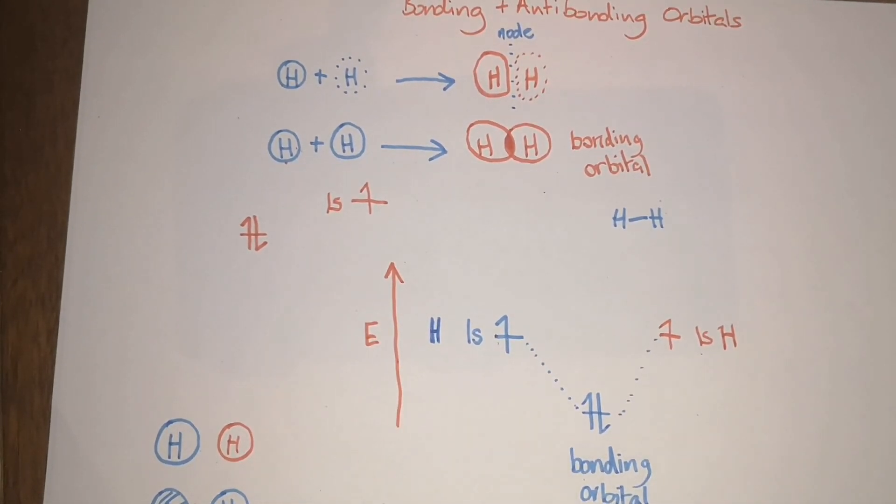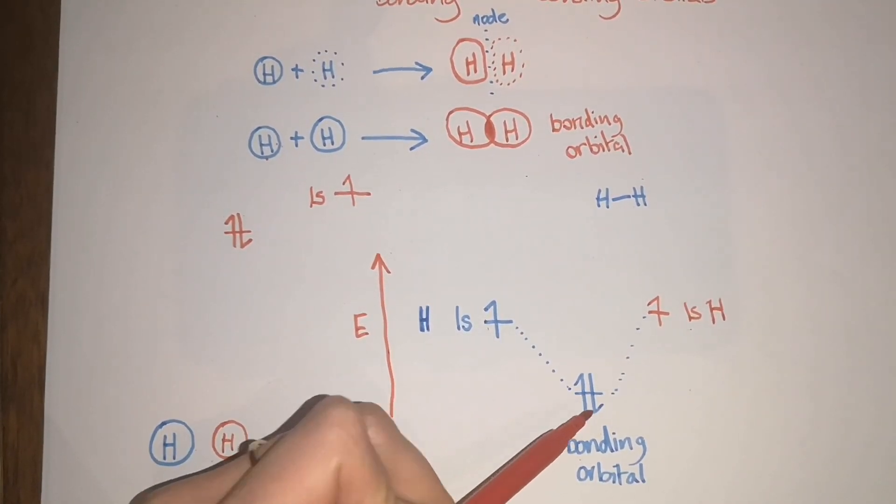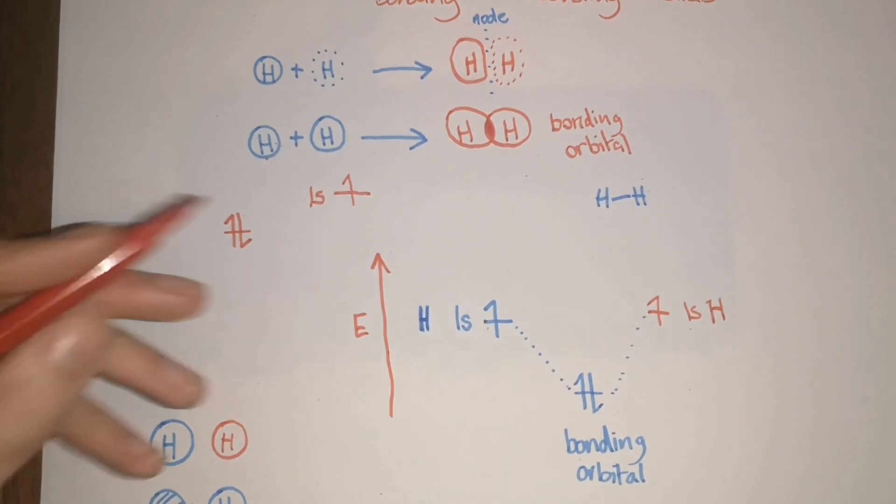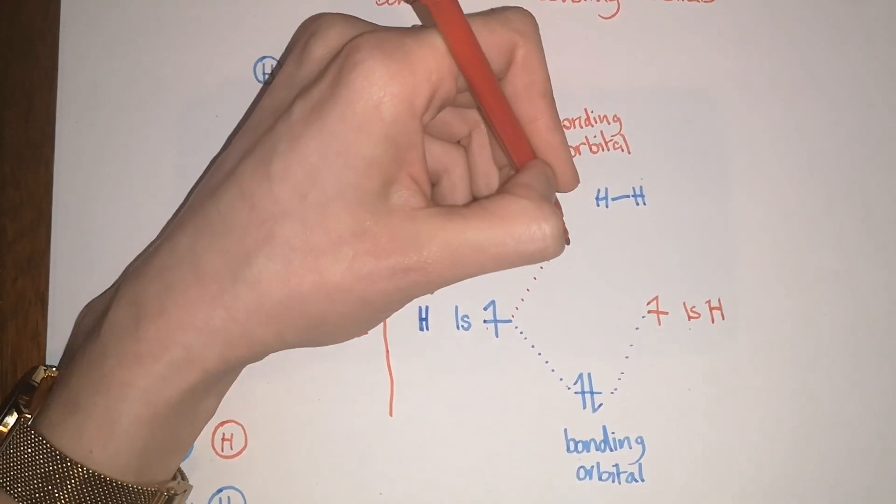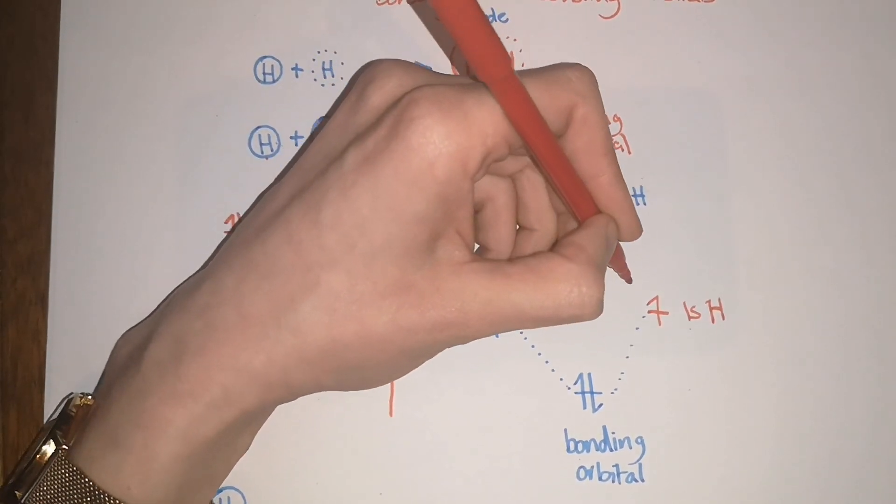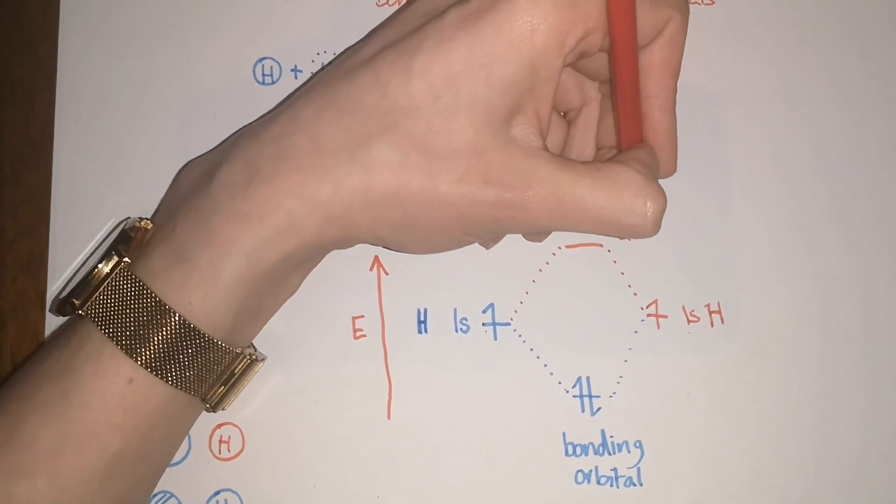If this one is going to go down in energy, there has to be an equivalent or a mirror. What happens is that another orbital will be formed that is much higher in energy, and this is called the antibonding orbital.